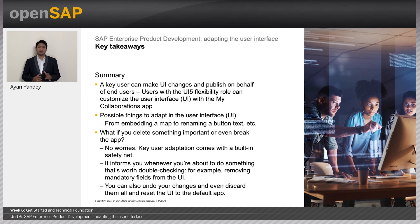What if you delete something important or even break the app? Don't worry — Key User Adaptation comes with a built-in safety net. It informs you whenever you are about to do something worth double-checking, for example removing mandatory fields from the UI. You can also undo your changes, discard them all, and reset the UI to the default app.